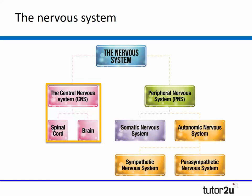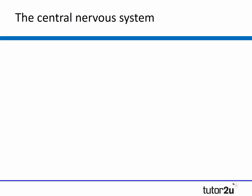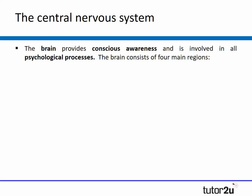Let's start by examining the central nervous system. For each part of the nervous system you need to be able to outline its role — in other words, what it actually does. The central nervous system consists of both the brain and the spinal cord. The brain provides us with conscious awareness and it's involved in all psychological processes, whether it's perception, attention, memory, and so on.